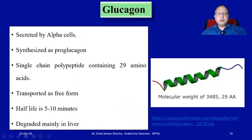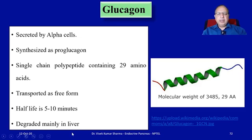The counter-regulatory hormone glucagon is secreted by alpha cells. It is synthesized as pro-glucagon and then converted into glucagon. It has a half-life of 5 to 10 minutes and is degraded mainly in the liver. It has a molecular weight of 3,485.